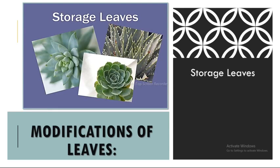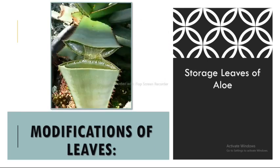Regarding storage leaves in detail: xerophytic plants and plants belonging to the family Crassulaceae have thick and succulent leaves that store water in their tissues. The parenchymatous cells of these leaves have large vacuoles filled with hydrophilic colloid. This modification helps the plant to resist desiccation. The storage leaves of Aloe are packed tightly into a flower-pot-like structure that catches falling water and debris, with parenchyma cells having a big central vacuole filled with hydrophilic colloid.